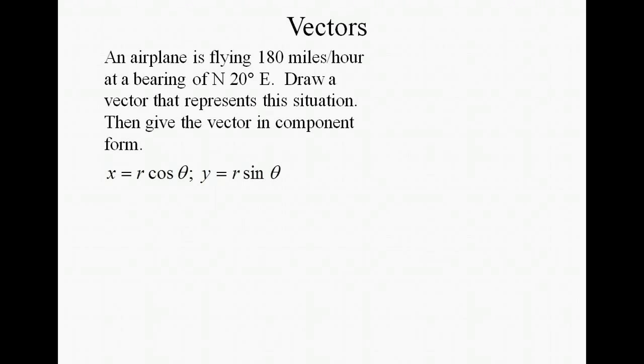Let's look at an example. Suppose that an airplane is flying at 180 miles per hour. That's its speed, and it has a bearing of north 20 degrees east, so that's its angle or direction. Let's go ahead and draw a vector that represents this situation. So we have our vector coming 20 degrees off the north line heading toward the east, with a length or speed of 180.